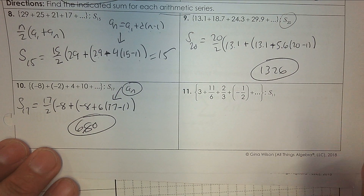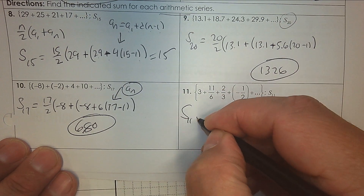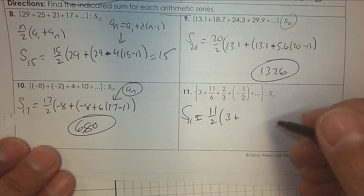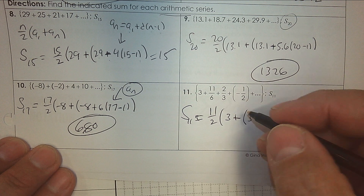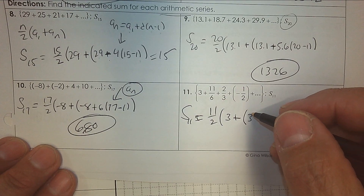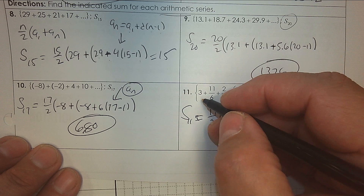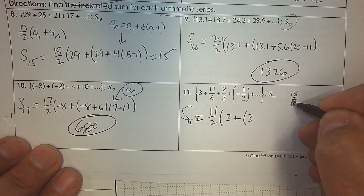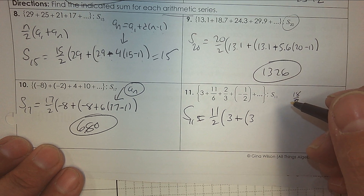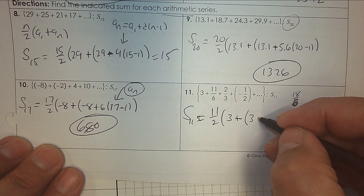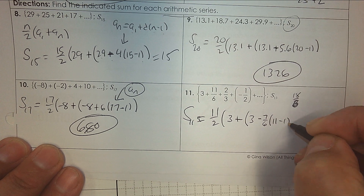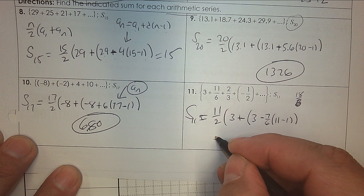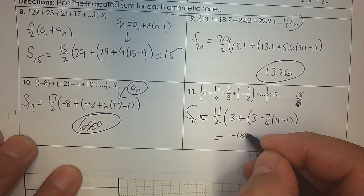Number 11 — 11 terms. So the setup is 11 divided by 2. That's the first term. To find the term I'm looking for, I start with 3. Is it going up or down? It's going down. Get common denominators — 3 would be like 18 over 6. So it's 7 over 6, and going down, so it's negative 7 over 6. Then 11 minus 1. Put that all in your calculator and I get negative 187 over 6.